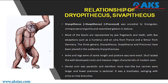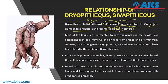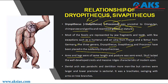Regarding the relationship of Dryopithecus with Shivapithecus and Proconsul: these were ancestral to the orangutan, chimpanzee, gorilla, and gibbon. Most Proconsul remains are represented by jaw fragments and teeth, with few exceptions such as a humerus and ulna from France and a femur from Germany. The three genera — Dryopithecus, Shivapithecus, and Proconsul — have been placed in the subfamily Dryopithecinae. Arms and legs were of equal length, posture was semi-erect, and the skull lacked well-developed crests. The dental arc was parabolic and dentition was more man-like, but canines were larger and the lower molar was sectorial.